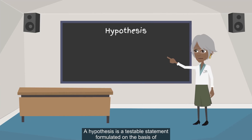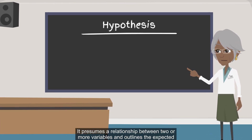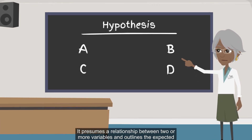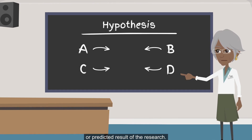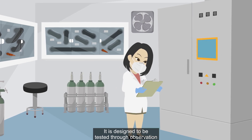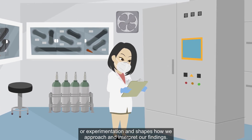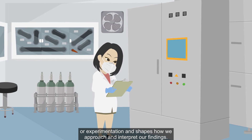A hypothesis is a testable statement formulated on the basis of preliminary observations or theories. It presumes a relationship between two or more variables and outlines the expected or predicted result of the research. It is designed to be tested through observation or experimentation and shapes how we approach and interpret our findings.